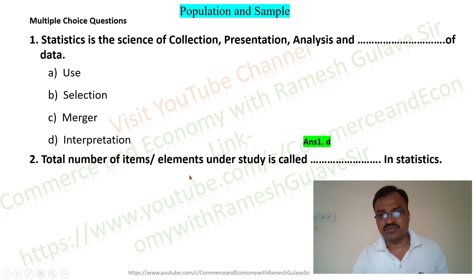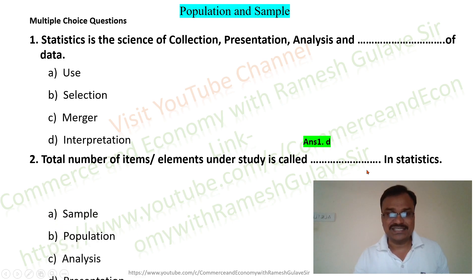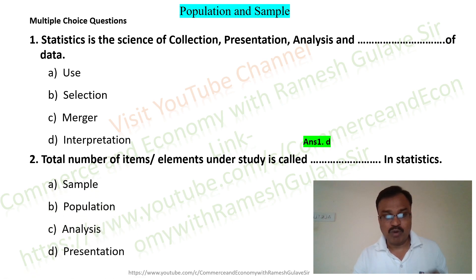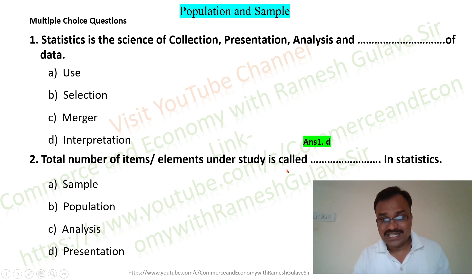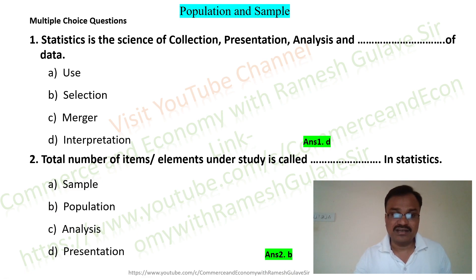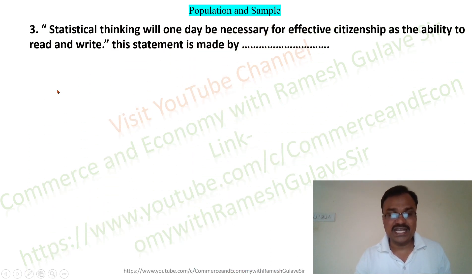The next question says: total number of items or elements under study is called dash in statistics. The options are: sample, population, analysis, and presentation. The total number of items or elements under study is called population in statistics, so option B is the right answer.